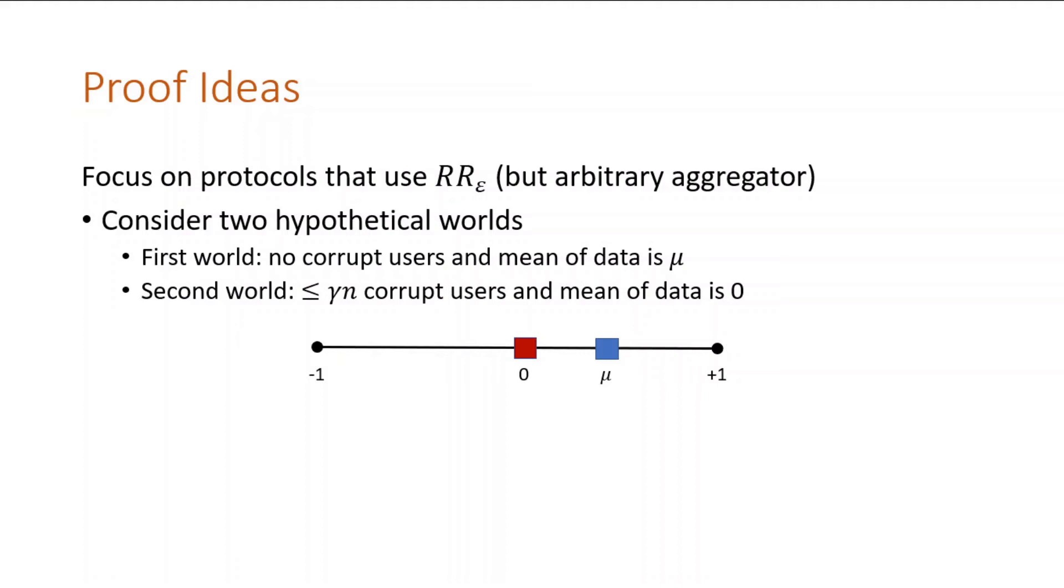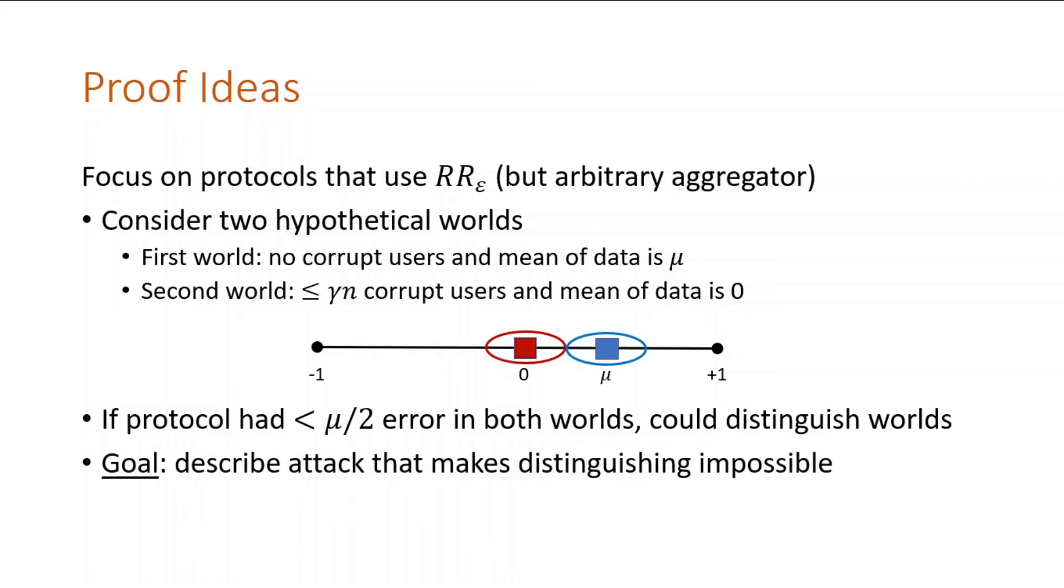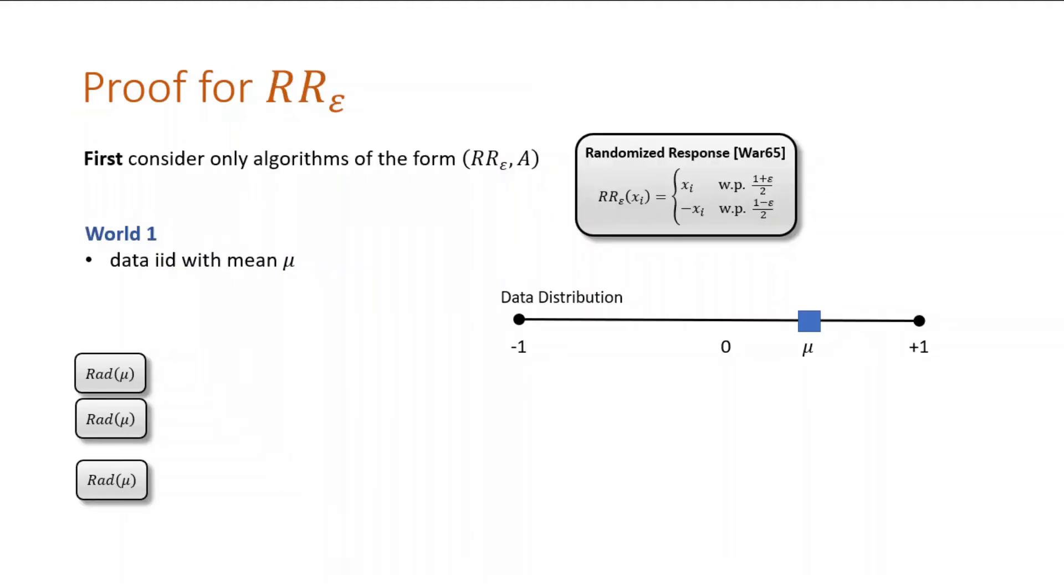Notice that when we have accurate estimates, we can distinguish the two worlds. These sets are disjoint. Our goal is to attack the protocol in a way that makes distinguishing impossible, which in turn means error must be at least mu over two. It has to be large.